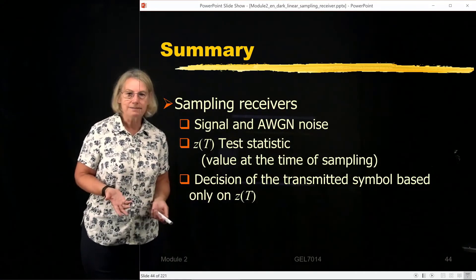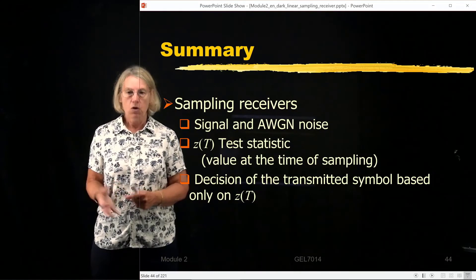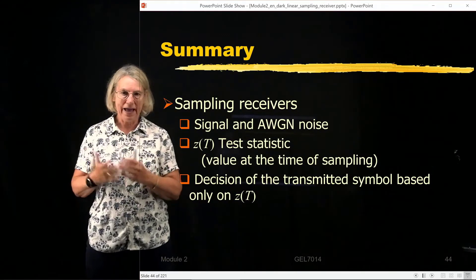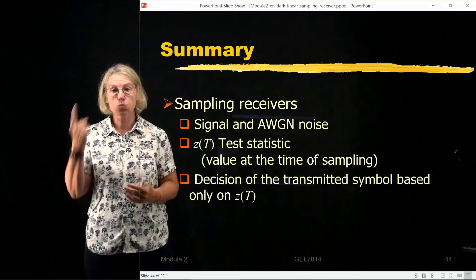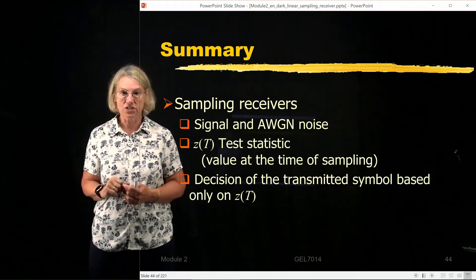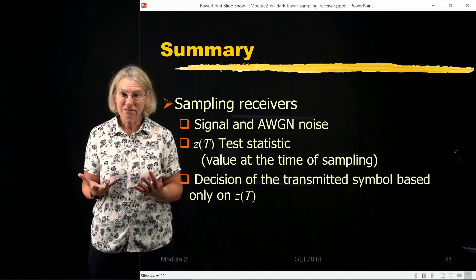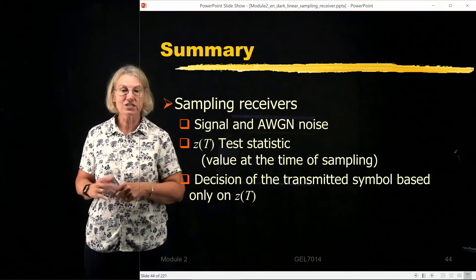So to summarize, we started looking at sampling receivers. We know that the signal is corrupted by additive white Gaussian noise. We know because it's a sampling receiver, there's one number, the test statistic, which is going to be used to make our decision. And that decision, based on this test statistic, we have a couple of strategies that we've looked at. We've looked at the maximum likelihood and the MAP receivers.